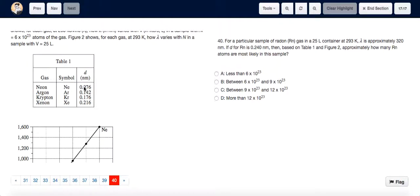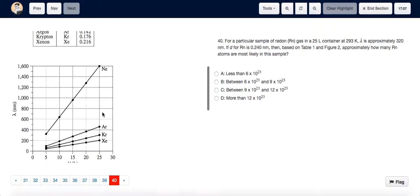For question 40, we can see that Neon, Argon, Krypton, and Xenon are arranged in increasing order of diameter, and Radon with a diameter of 0.240 would come after Xenon.